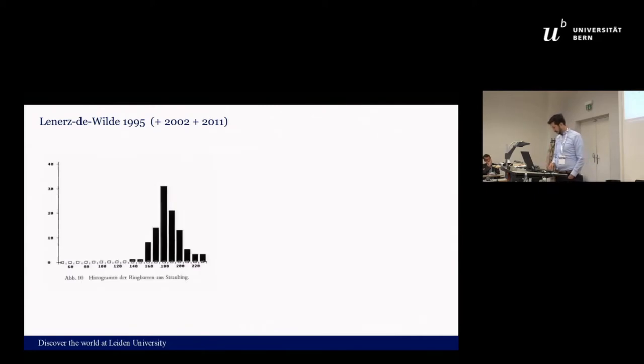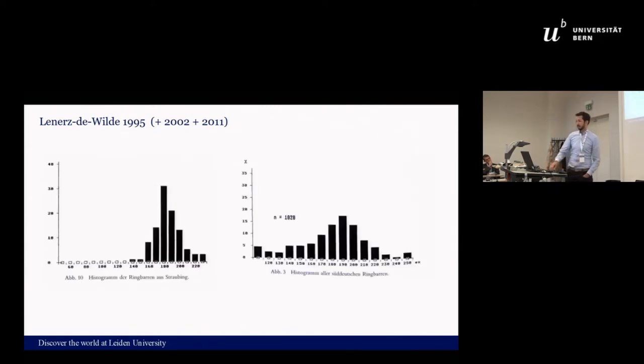Let's first have a look at some of the findings of Lenertz-de Wilde. She used a rather banal method, simple histograms, and the histograms do clearly show that something is going on and that there seems to be a kind of standardization when you're looking at these rings around 200 grams or basically within 170 to 220 grams. That's where most of these rings fall.